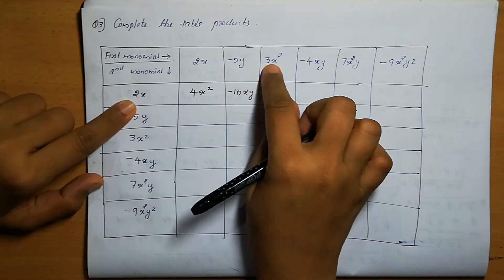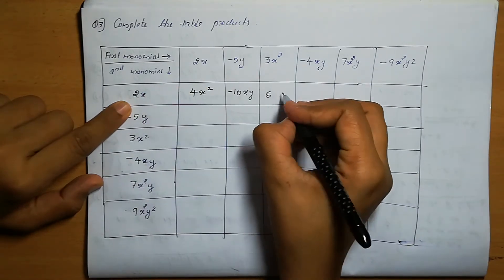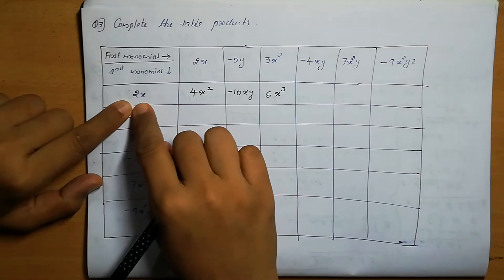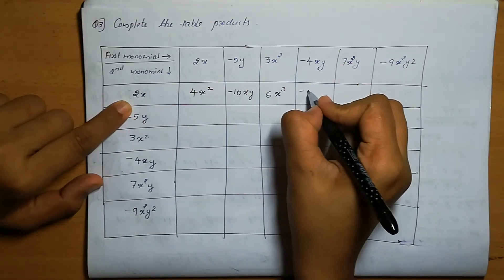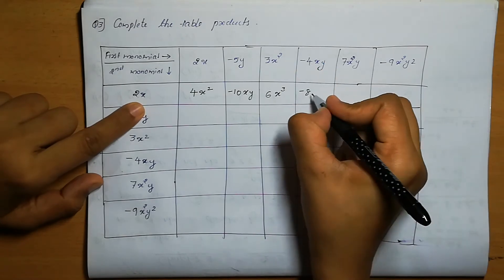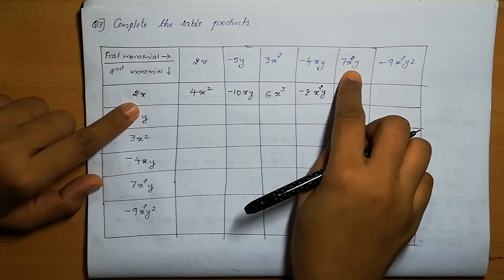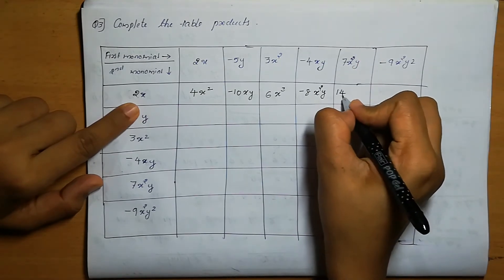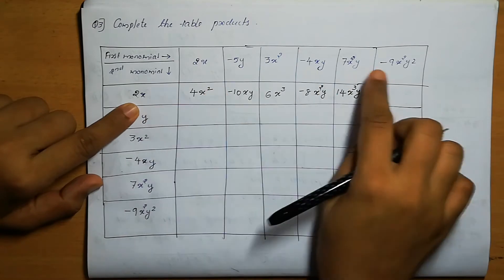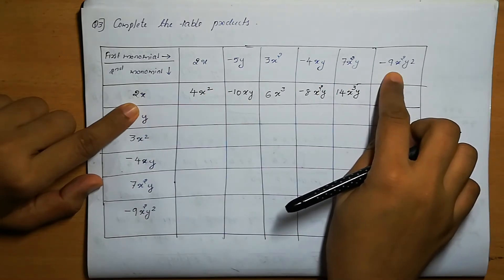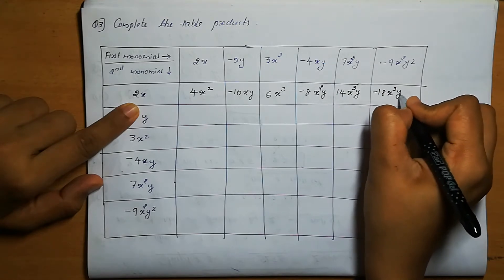Next: 2x into 3x square — 2 into 3 is 6, x into x square is x cube. Next: 2x into minus 4xy — 2 into minus 4 is minus 8, x into xy is x square y. Next: 2x into 7x square y — 2 into 7 is 14, x into x square is x cube, giving 14x cube y. Next: 2x into minus 9x square y square gives minus 18x cube y square.